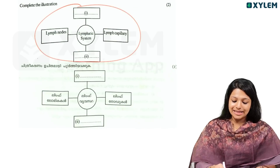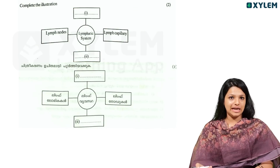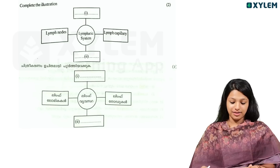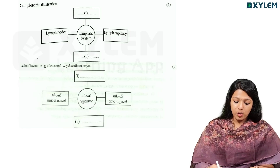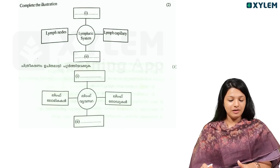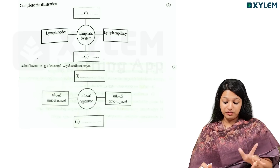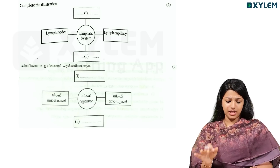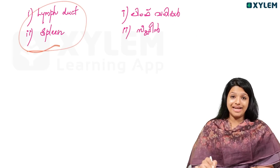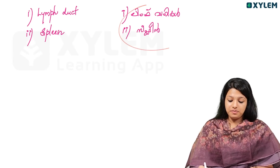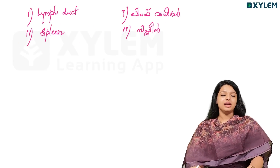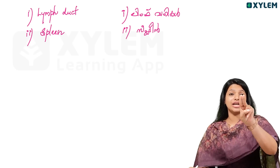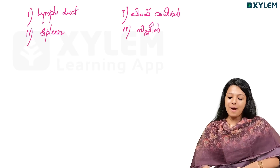Now complete the illustration. Lymph is an important topic. This is a fill-in-the-blanks with two parts: lymph capillary and lymph. The other components are lymph ducts and spleen. These two are the missing answers: lymph ducts and spleen.